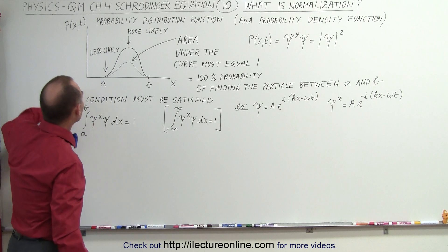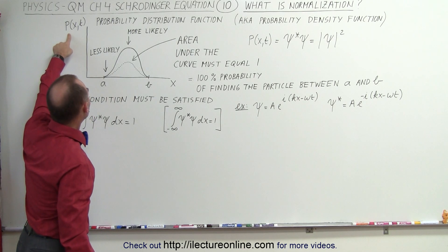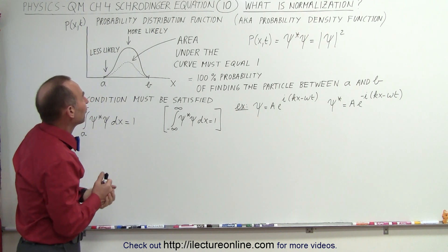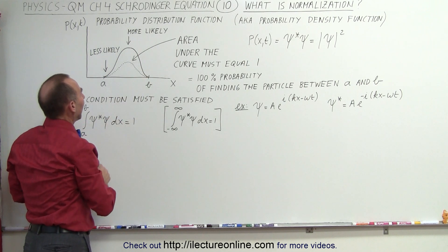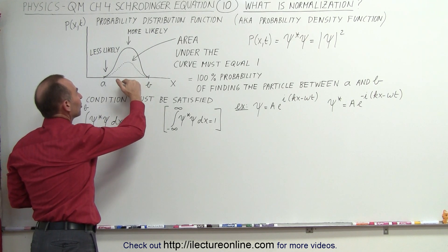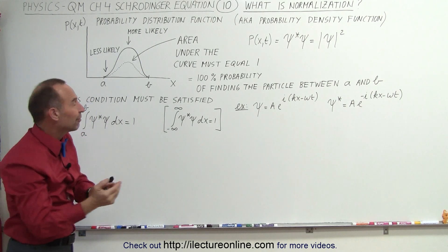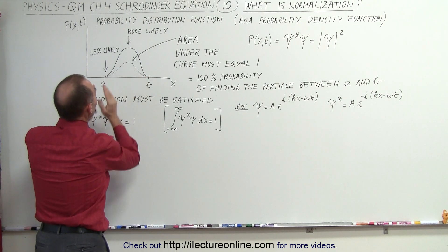So we realized that we had an equation that we called p of x and t that could be called the probability distribution function or the probability density function. And here we drew it on the board. And we realized that if that function had a large amplitude, it meant that it was more likely to find the particle at that particular location in x.